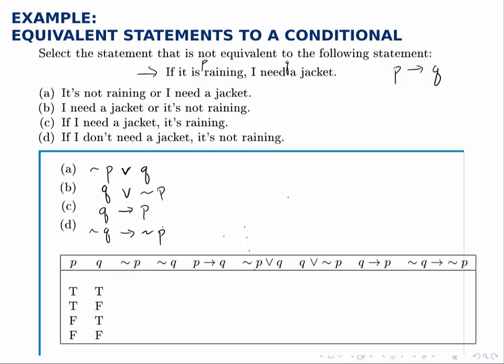These four symbolic statements are equivalent to the four English statements. Now, to see which one of these is equivalent to the first given, P implies Q,